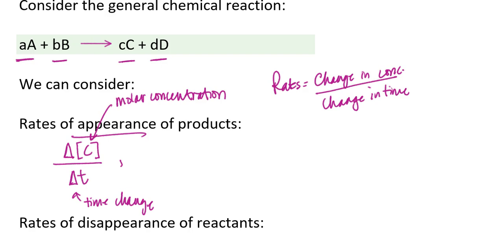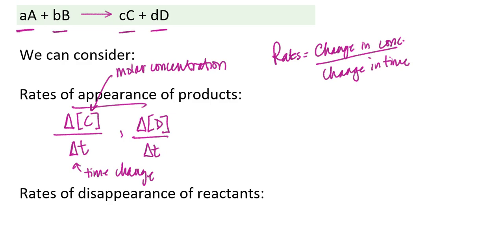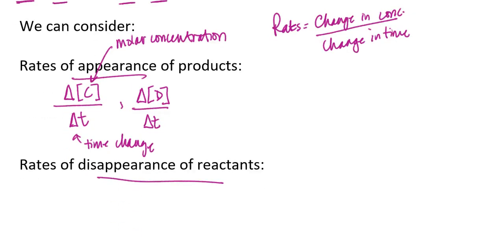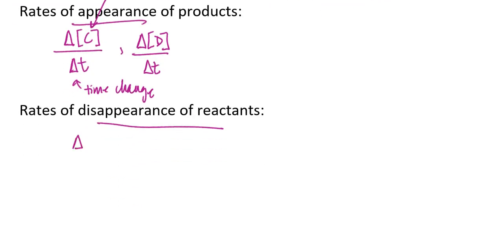I can do something similar for the rate of appearance of product D — that would be change in molar concentration of D divided by the time change. I could also write these same sets of symbols for the rate of disappearance of a reactant. So for A, that would be the difference in the molar concentration of A divided by the time change. But since this is a rate of disappearance, I would need to assign this rate a negative sign to show that this species' concentration is dropping.